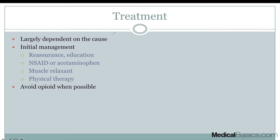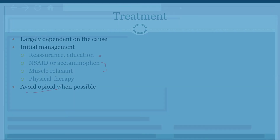Finally, treatment — and this puts into perspective why we don't get imaging as frequently as you might expect. For the most part, these patients are going to get reassurance and education, as well as NSAIDs, acetaminophen, and muscle relaxants as the primary treatments. For the more benign issues, if you're not worried about cancer or infection, that's how you treat these patients. You're going to want to avoid opioids when you can, and educate patients on when imaging is appropriate and why anti-inflammatories and pain medications are preferred over opioids.